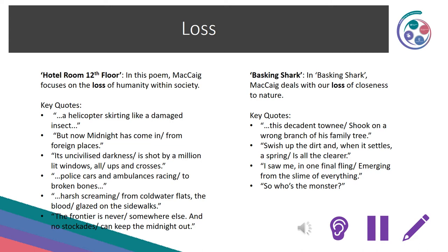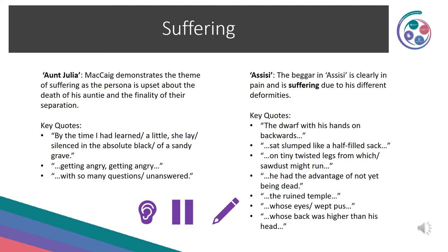If you hadn't thought about the poems in this particular way before, make sure you're adding some information into your revision books. The final theme in this section is suffering. In Aunt Julia, McCaig demonstrates suffering as the persona is upset about the death of his auntie and the finality of their separation. Key quotes: 'By the time I had learned a little, she lay silenced in the absolute black of a sandy grave' and 'getting angry, with so many questions unanswered.'